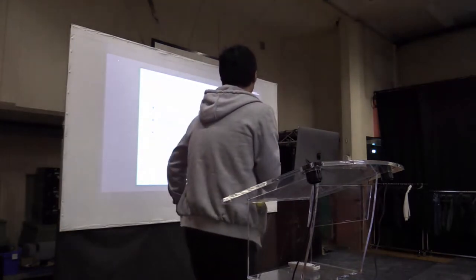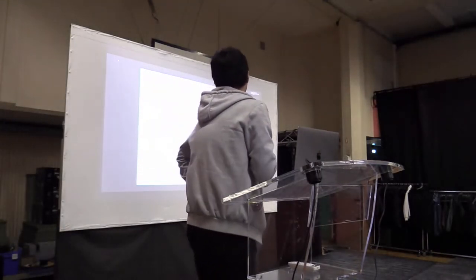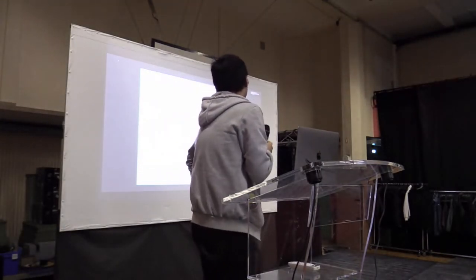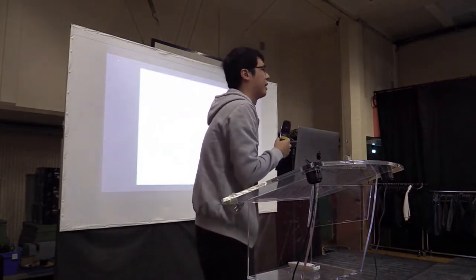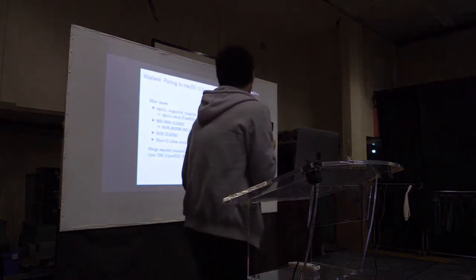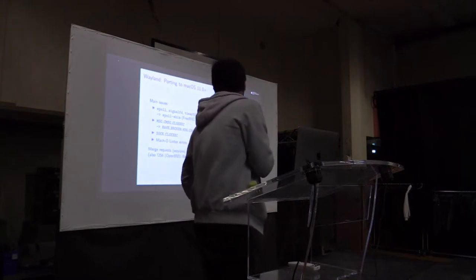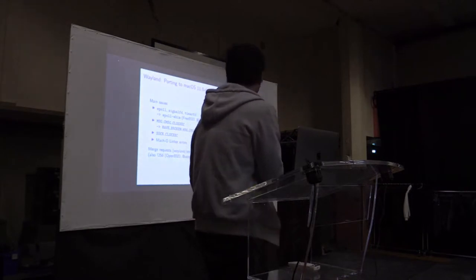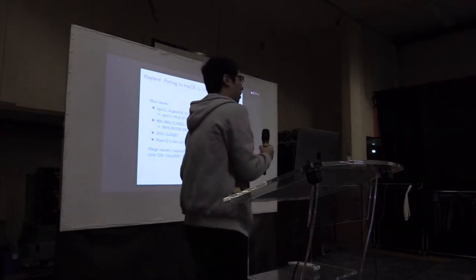For the second issue, I simply use the constant that is defined for FreeBSD and just define it again for Darwin. And for the SOC_CLOEXEC, I define another constant, same as above.